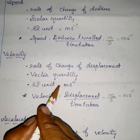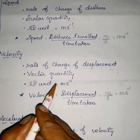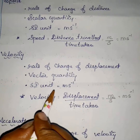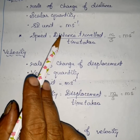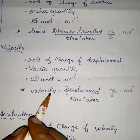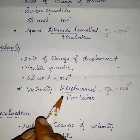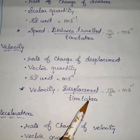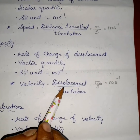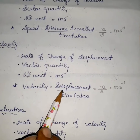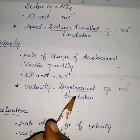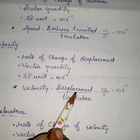Velocity is the speed with direction. Speed is the magnitude of the velocity. The formula is: velocity is equal to displacement by time taken. What is displacement? The change in position of the moving body in a particular direction is called displacement.